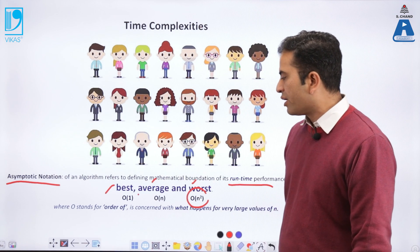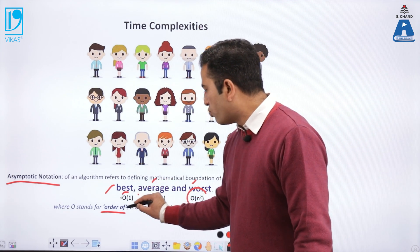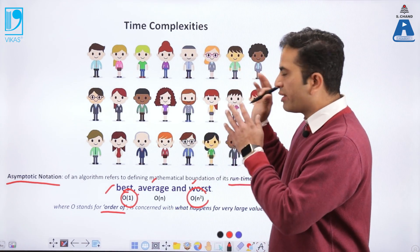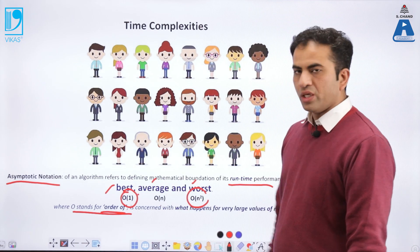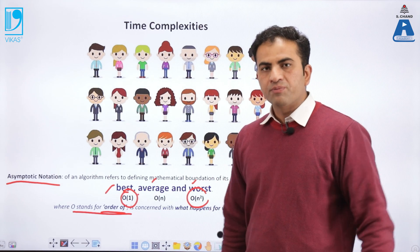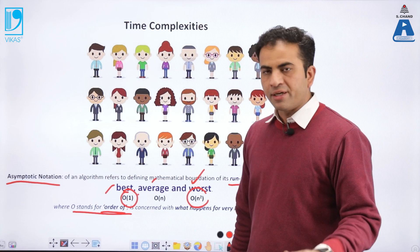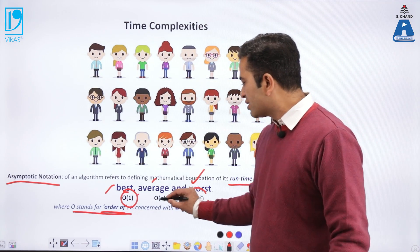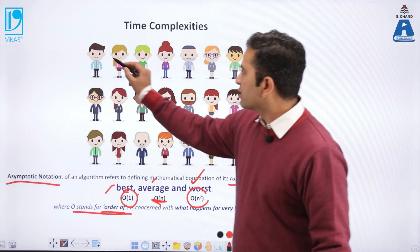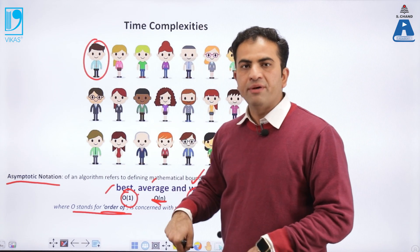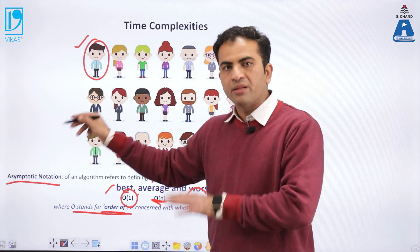O(n²) — what is the meaning of O here? O is 'order of'. Order of n square is the worst, order of n is the average, and order of 1 is the best. When we talk about the efficiency of any algorithm, we must focus on the worst case. If the worst case is O(n²), the time complexity is very hard. If the worst case is O(n), that is very good. And if the best case is O(1) — that means I am asking the first person do you have a pen, and they say yes. I do not have to ask anyone else. This is called the best case.